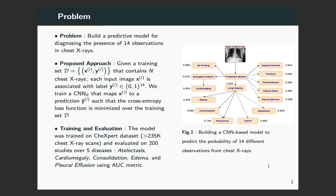In this study, we aim to develop a deep learning system to predict the presence of 14 observations from Chest X-ray. To solve this problem, we trained a deep convolutional neural network in a multi-label setting using cross-entropy as the loss function. The models were trained on the CheXpert dataset containing more than 200,000 images, and model performance was evaluated over 5 diseases using AUC score.